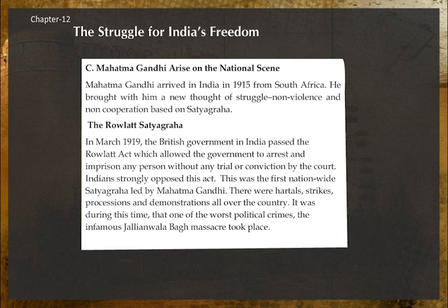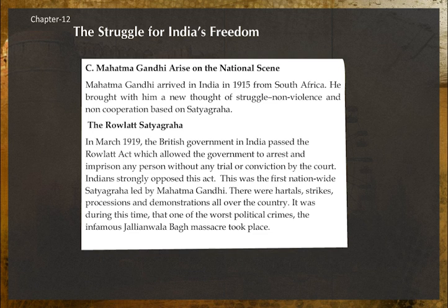The Rowlatt Satyagraha: In March 1919, the British government passed the Rowlatt Act, which allowed the government to arrest and imprison any person without trial or conviction. Indians strongly opposed this act. This was the first nationwide Satyagraha led by Mahatma Gandhi, and there were hartals, strikes, processions, and demonstrations all over the country.